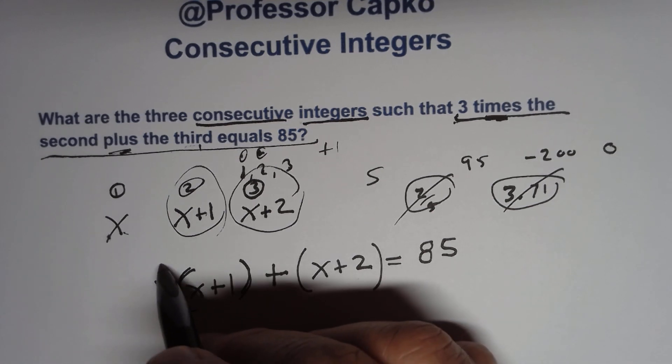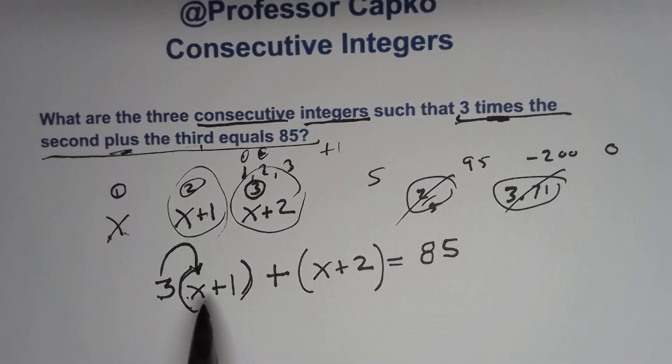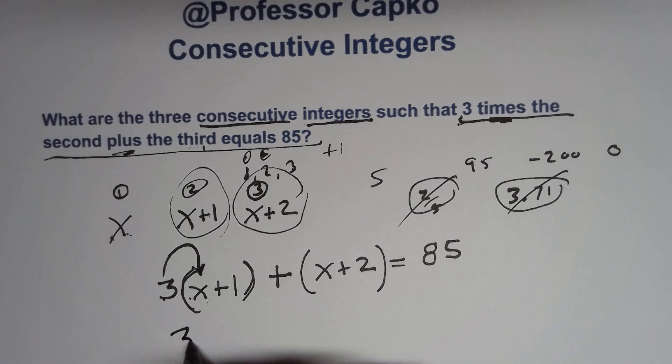So it means I multiply three times the first term. So it's three times X. Three times X is three X. And then I take it and I multiply it by the second term. Three times positive one. Three times positive one is positive three. So far so good.